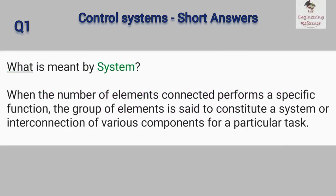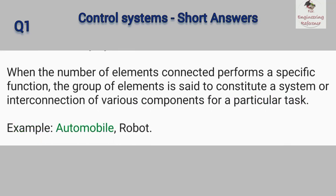What is meant by system? When the number of elements connected performs a specific function, the group of elements is said to constitute a system, or interconnection of various components for a particular task. Example: automobile, robot.